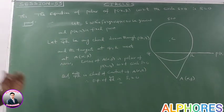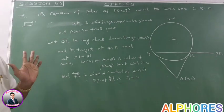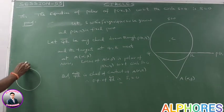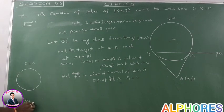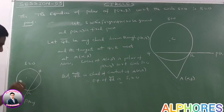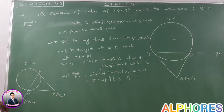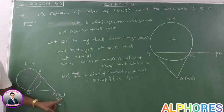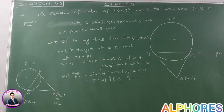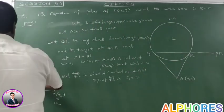Proof: Let S = x² + y² + 2gx + 2fy + c = 0 be the given circle, and P(x1, y1) is the fixed point. Let QR be any chord drawn through P(x1, y1). The tangents at Q and R meet at A(α, β). The locus of A(α, β) is nothing but the polar of P(x1, y1) with respect to the circle S=0. QR is the chord of contact of A(α, β) with respect to the circle S=0.